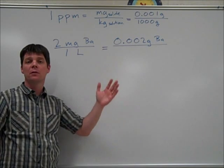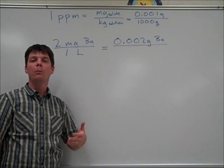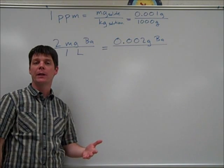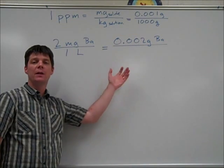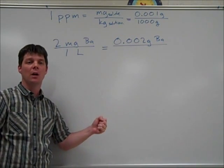One liter of solution—because our solution is water—will be equivalent to 1,000 milliliters. Because the density of water is one gram for every one milliliter, this will be 1,000 grams of solution.